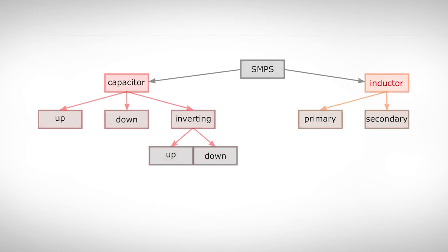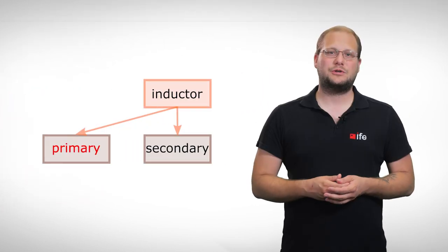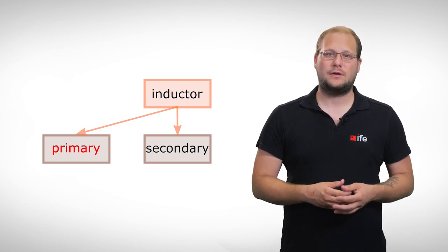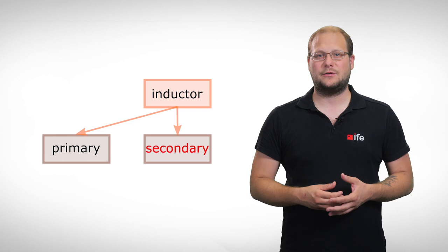With the inductor as storage element there are two major groups, primary and secondary switched power supplies. The difference between these two types is the location of the switching element. For primary switched power supplies, the switch is on the primary side of the transformer, otherwise it is on the secondary side.